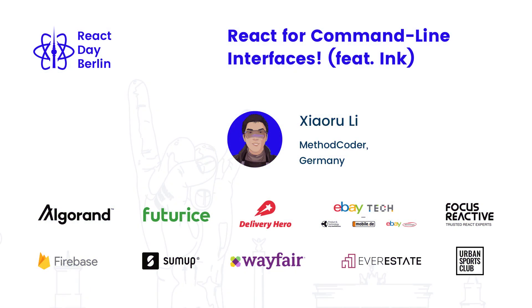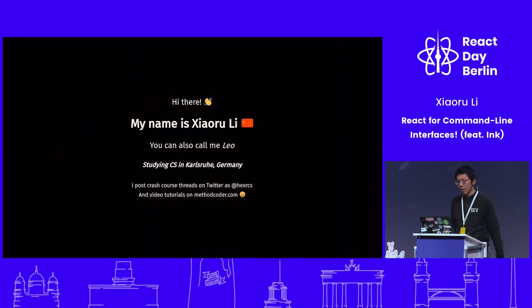Hello everybody. My name is Xiaoru Li, and you can also call me Liu. I come from China, and currently I study CS in Germany in a city called Karlsruhe. I post crash courses on Twitter, like learn GraphQL in ten tweets and stuff, and also make videos on my YouTube channel called Method Coder.